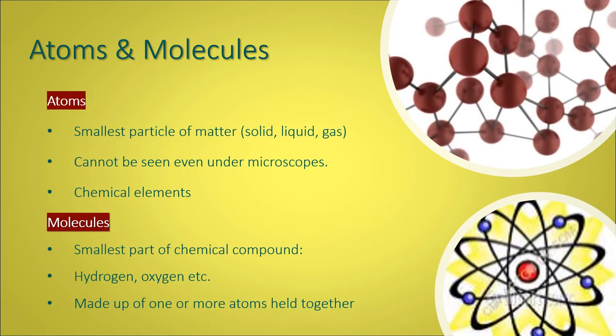The smallest particle of matter is an atom. These can't even be seen under a microscope. Most living things are made up of hydrogen, carbon, and oxygen. These atoms combine together to form a molecule. Our cells, or every living cell in our body, is made up of atoms and molecules as well.